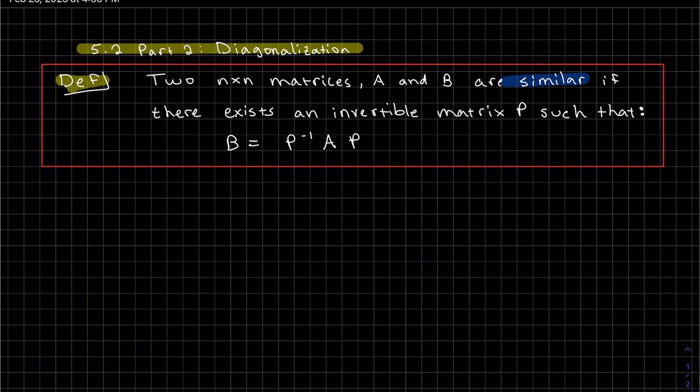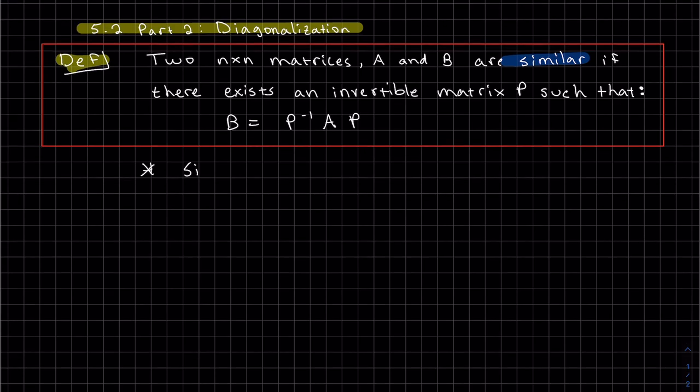If we have two square matrices, A and B, A and B are similar if there exists an invertible matrix P such that B equals P inverse AP. Similar matrices will come up again in this book, but for now, we just need to know that similar matrices have the same eigenvalues.